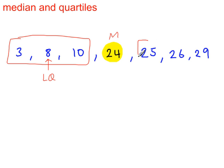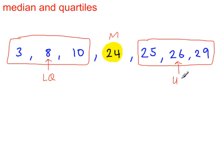Look at the upper half of the data. The middle number there is 26. That's the upper quartile.